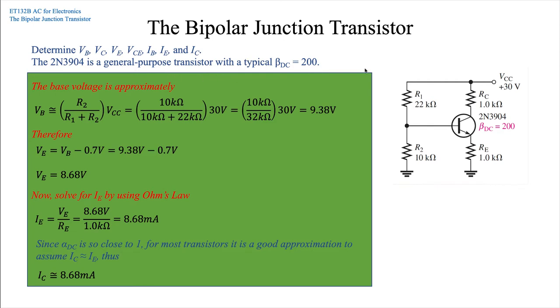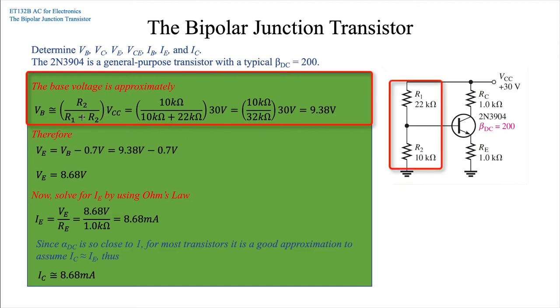Let's just go through each of these using either Ohm's law or the voltage divider and solve for the unknowns. In this case, we're going to solve for the base voltage, and it's approximately the value of the voltage divider. We've got our voltage divider here, R1 and R2, and we use VCC as the source across that voltage divider. So we have 10k ohm divided by the sum of 10k and 22k ohm resistors, multiply that times 30 volts for VCC, and we end up with a value of 9.38 volts.